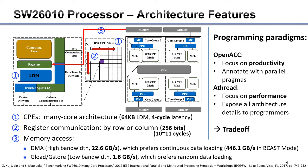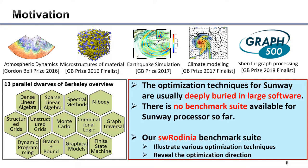Currently, there are two parallel programming paradigms supported on the Sunway processor: OpenACC and AThread. OpenACC primarily focuses on productivity — it is easy to parallelize programs with pragma annotations — whereas AThread exposes the architectural details to programmers, which is less friendly but allows users to manipulate program execution at fine granularity.